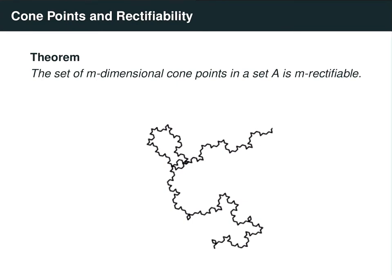We can use the previous theorem to prove the following result: given a set A, the set of its m-dimensional cone points is an m-rectifiable set. Part of the challenge is that, compared to the previous theorem, every point has a cone of a particular radius, particular aperture, and particular axis. To sketch the proof: we first take a dense collection of n-m dimensional planes and a dense collection of apertures alpha. We can show that the cone at each cone point contains a slightly smaller truncated cone with axis and aperture belonging to these countable sets. So without loss of generality, we focus on cone points that all share the same axis v and same aperture alpha.